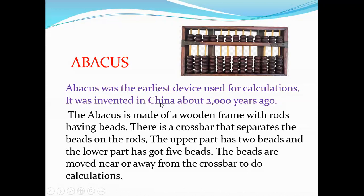Can you know what was invented in China and how many years ago it was invented? 2000 years ago. The abacus is made of a wooden frame with rods having bits. There is a crossbar that separates the bits on the rod.